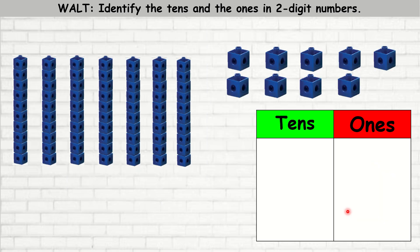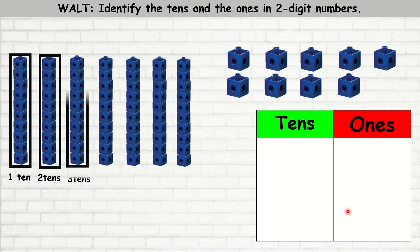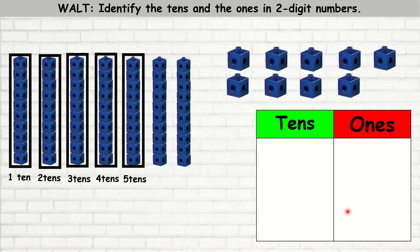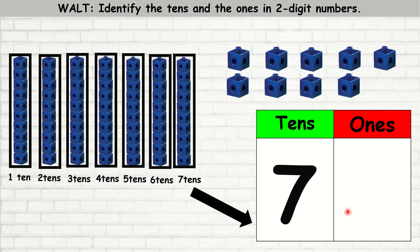Let's try another example. Here we've got one ten, two tens, three tens, four tens, five tens, six tens, seven tens. So we're going to write it in the tens column. And then how many ones do we have? One, two, three, four, five, six, seven, eight, nine. So the ones is nine. To read this number, we would read it as 79.